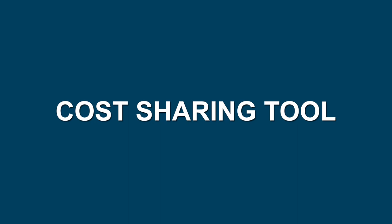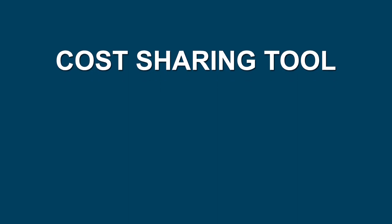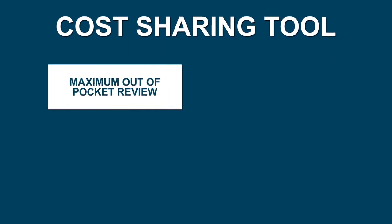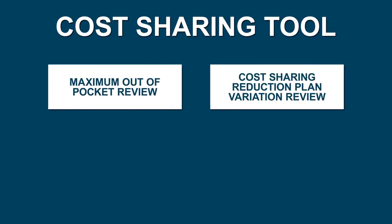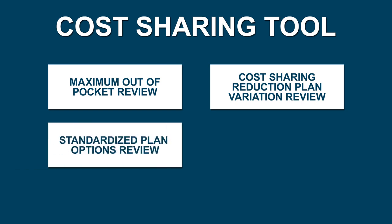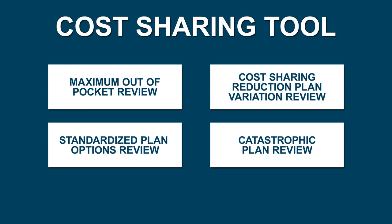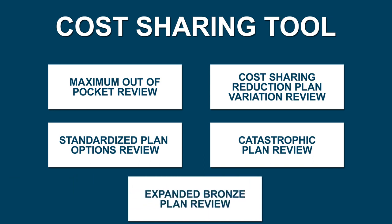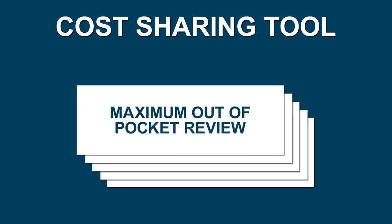These five reviews include the Maximum Out-of-Pocket Review, the Cost Sharing Reduction Plan Variation Review, the Standardized Plan Options Review, the Catastrophic Plan Review, and the Expanded Bronze Plan Review. The tool gives you the option to run each review separately or all at once.